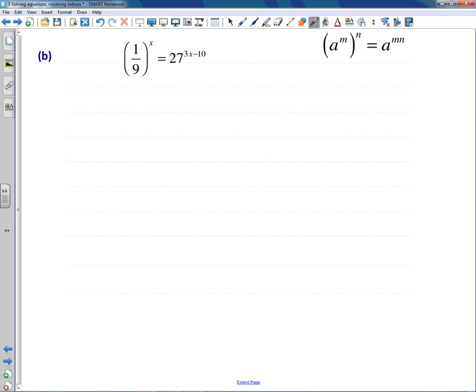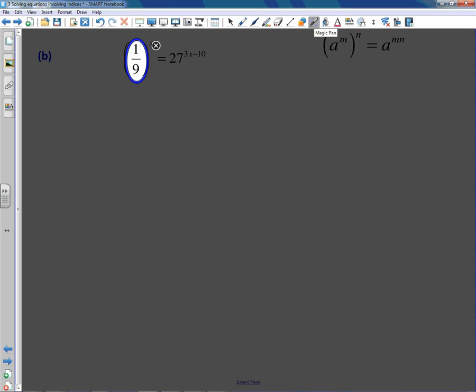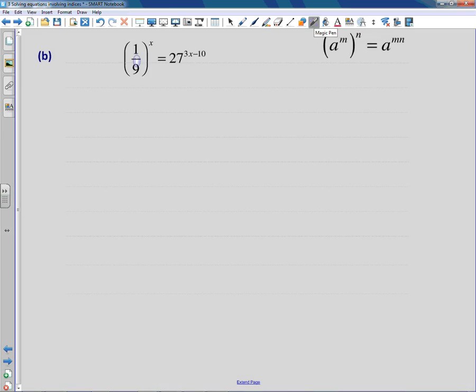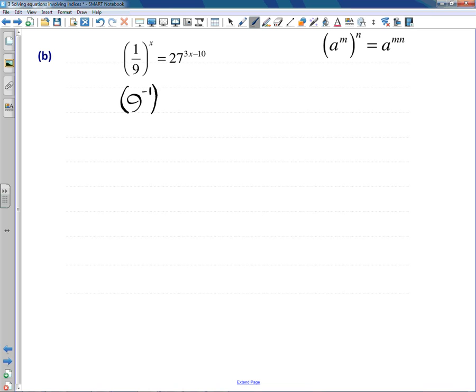But before I get into there, let's deal with this fraction here. We don't like the fact we've got a fraction, so we could rewrite this as 9 to the power of negative 1. That's the only thing I'm going to change. So a 9—I'm just rewriting it.